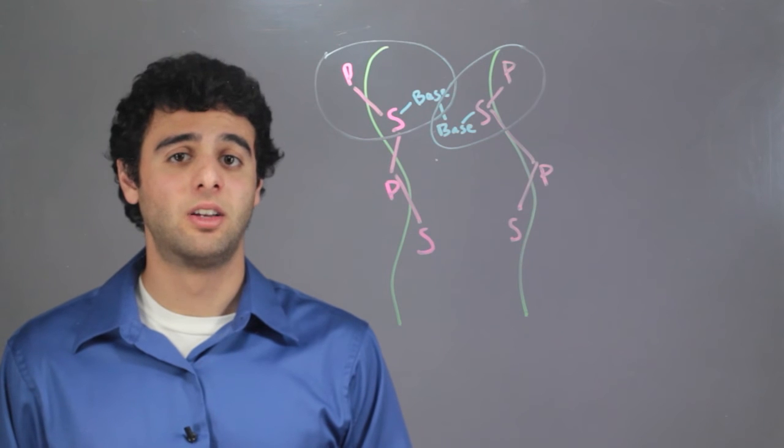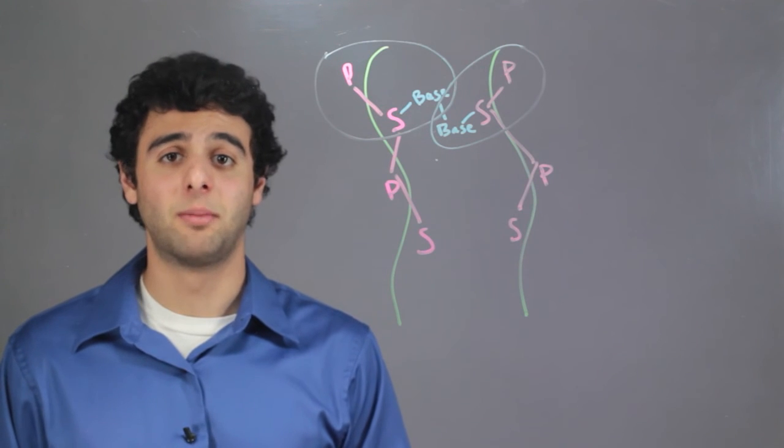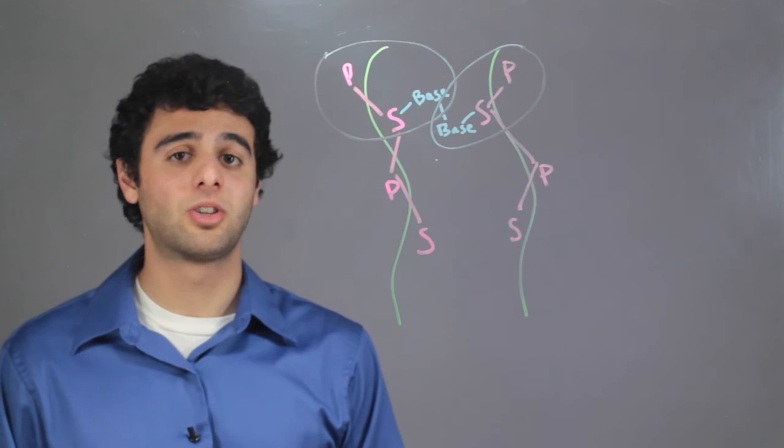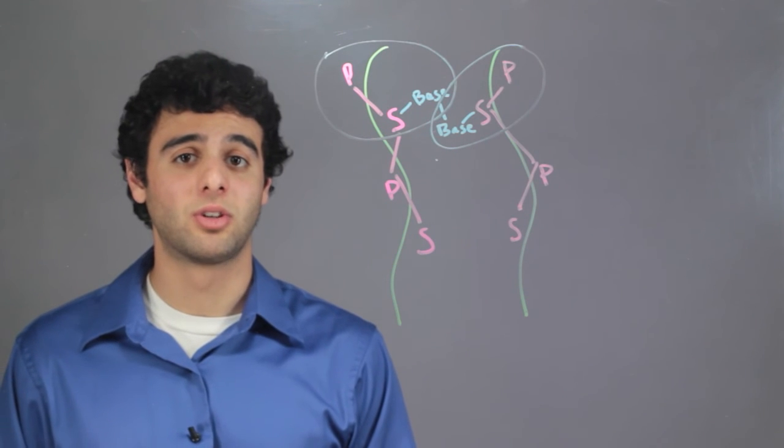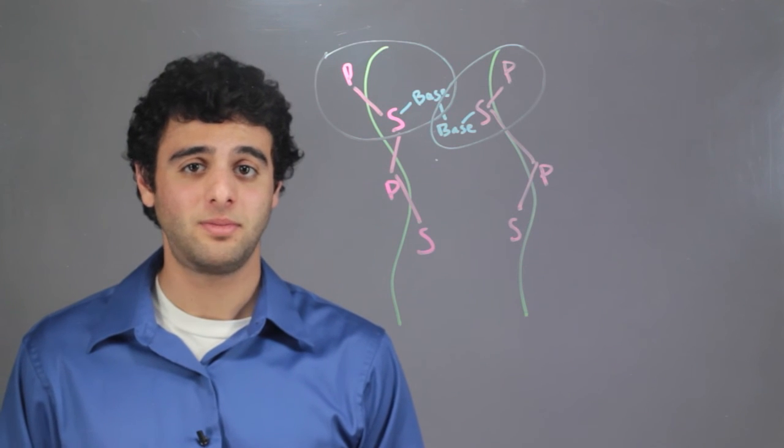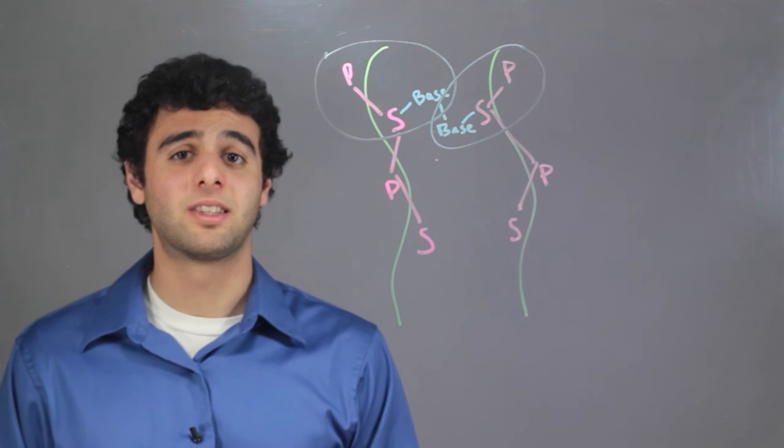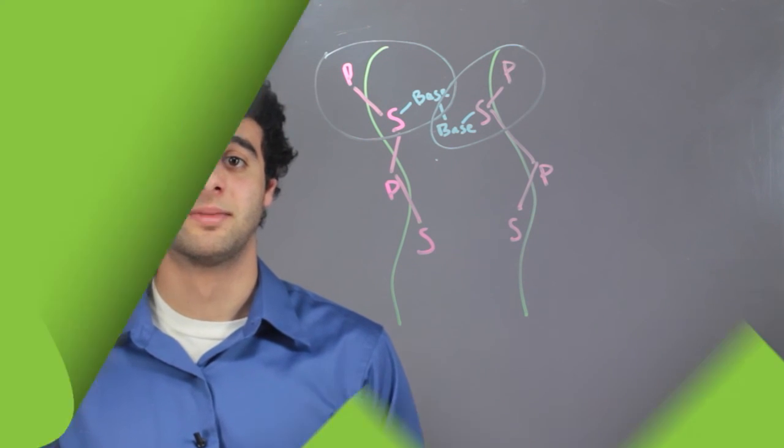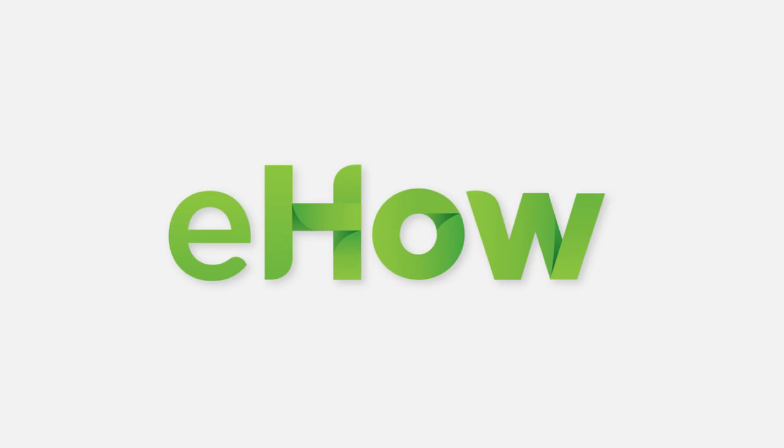We have phosphate, sugar, base. That means we have one nucleotide. So looking at the overall picture, we have several nucleotides present throughout an entire DNA molecule. I'm Mike Almeida, and this has been Where Are Nucleotides Located in DNA? Thank you again!